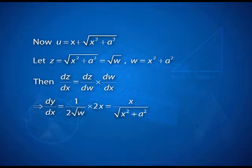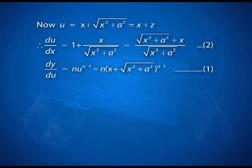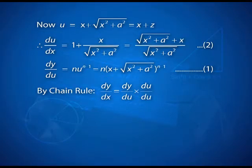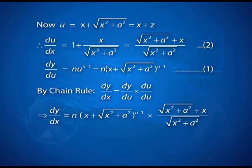So our u, which was x + z, has its derivative ready as 1 + x/√(x² + a²). Now going back to finding dy/dx: I already have dy/du and now I have du/dx. Using the chain rule, dy/dx is the product of these two expressions. Notice that the two expressions being multiplied have something in common. Using the rule that when the base is the same, powers get added, the expression simplifies to n·y / √(x² + a²).